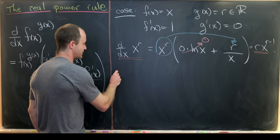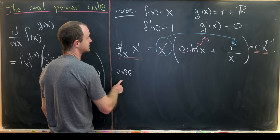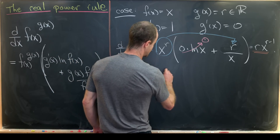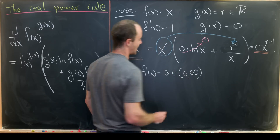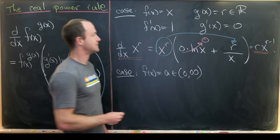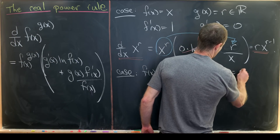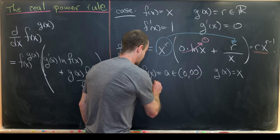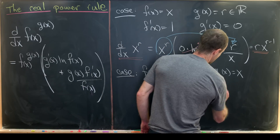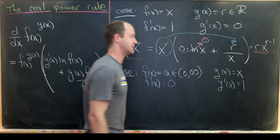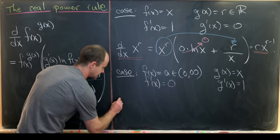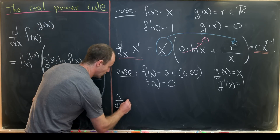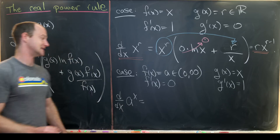Now let's jump into the second and final case: when f(x) equals a, a positive real number, and g(x) equals x. If f(x) is a constant, then f prime(x) equals zero. And since g(x) equals x, g prime(x) equals one. So we're looking at the derivative with respect to x of a^x.